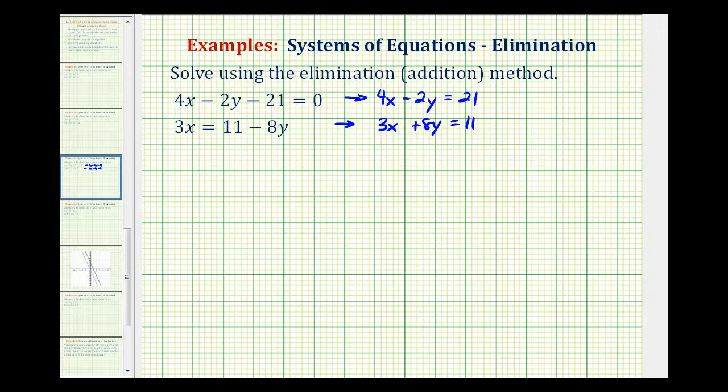So let's eliminate the y terms by multiplying this first equation by positive 4. And then we'll leave the second equation the same, and this will eliminate the y terms. So we multiply everything by 4 here. We'll have 16x minus 8y equals 84.